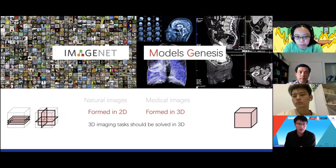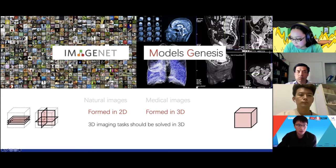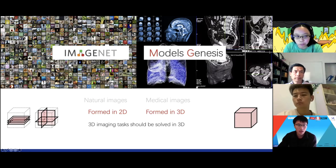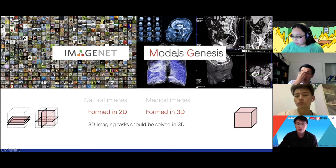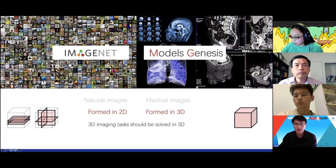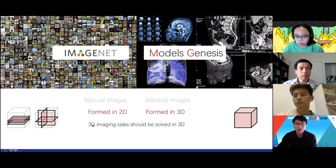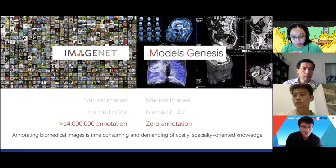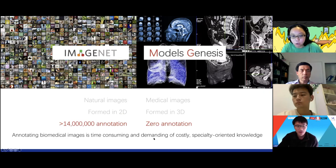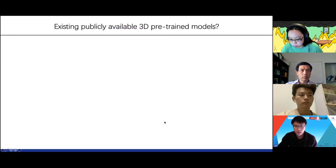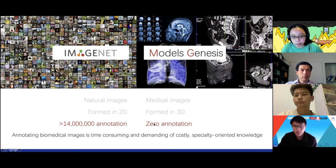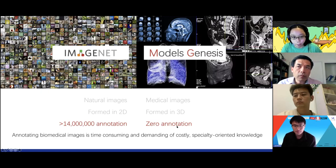Another benefit is that ImageNet is formed in 2D — all the natural images are 2D, so the pre-trained models are also 2D. While most dominant medical modalities are in 3D, for example CT, MRI, and ultrasound. We assume that 3D imaging tasks should be directly solved in 3D. Moreover, most importantly, ImageNet demands a huge annotation effort. But we pre-train Models Genesis with self-supervised learning, which means we don't need any human manual expert annotation.